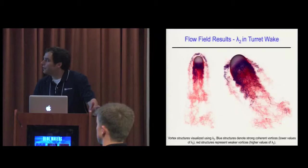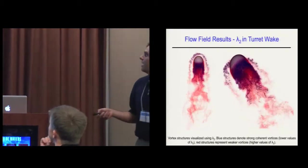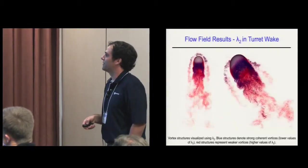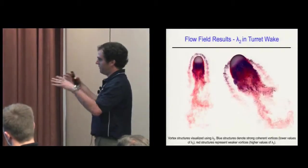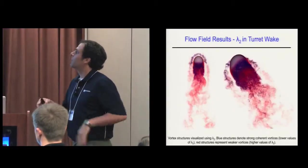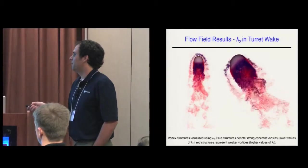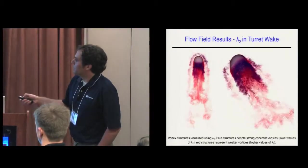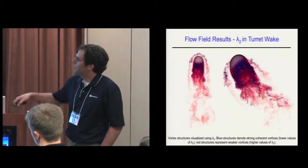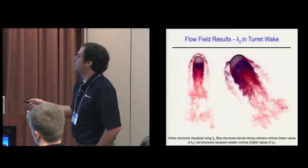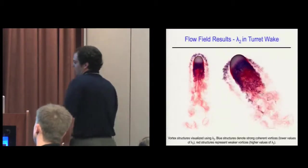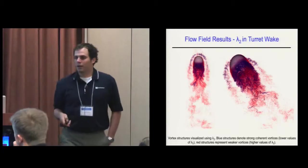Here's a nice little movie - it looks like a jellyfish. This is lambda-2, a vortex identification value with a complicated formula. Blue structures denote more coherent vortices and red are weaker vortices. You can see on the front this is what we call a horseshoe or necklace vortex that forms at the junction where the turret meets the wall.